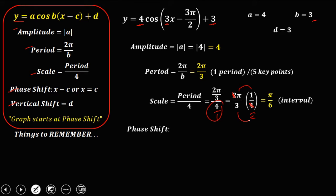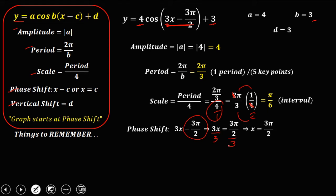To solve for the phase shift: set 3x equal to 3π/2, then solve for x by dividing both sides by 3. That gives 3π/2 times 1/3 — the 3s cancel — so therefore the phase shift is π/2.